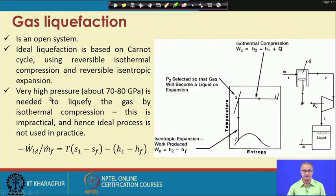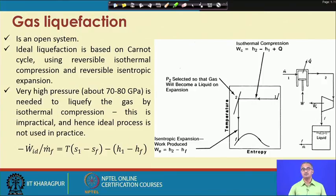Very high pressure is needed to liquefy the gas if we use isothermal compression. This pressure is about 17 to 80 gigapascal, where 1 gigapascal equals 10 to the power 9 pascal. We need very high pressure to convert the gas into liquid by isothermal compression. It is not feasible because there is no compressor which can generate such a high amount of pressure. This is an ideal process cycle and the ideal process is never used in practice.